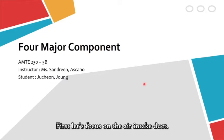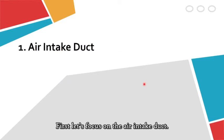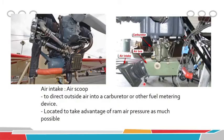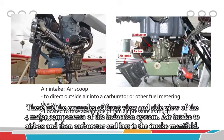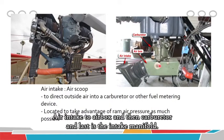Let's focus on the air intake duct. These are examples of the front view and the side view of the four major components of the induction system: air intake to the air box, then carburetor, and last is the intake manifold.